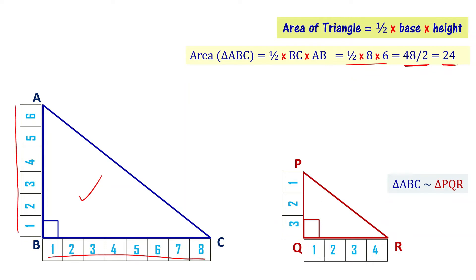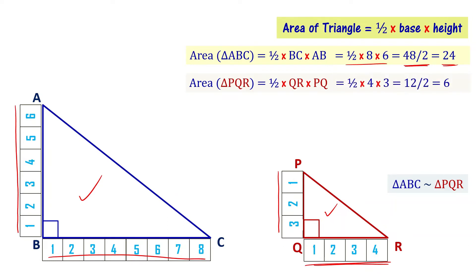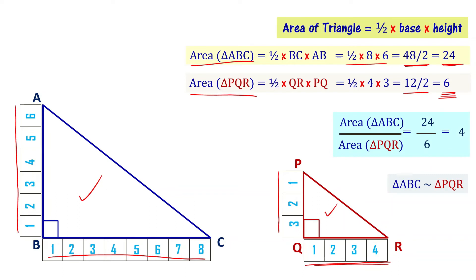Area of triangle ABC versus area of triangle PQR. Substituting QR equal to 4 and PQ equal to 3, we get 12 by 2, which equals 6. So the area of triangle ABC is 24 and the area of triangle PQR is 6. The ratio of these areas, area of triangle ABC divided by area of triangle PQR, is 24 by 6, which equals 4 to 1.